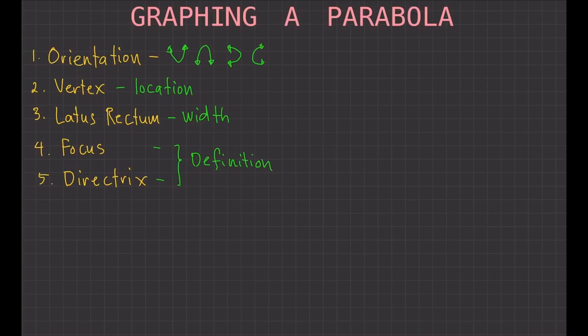Once we know all these parts, we can start to graph the parabola. Let's say we have the equation (x minus 2) squared equals 4 times (y minus 2). Let's graph this equation.